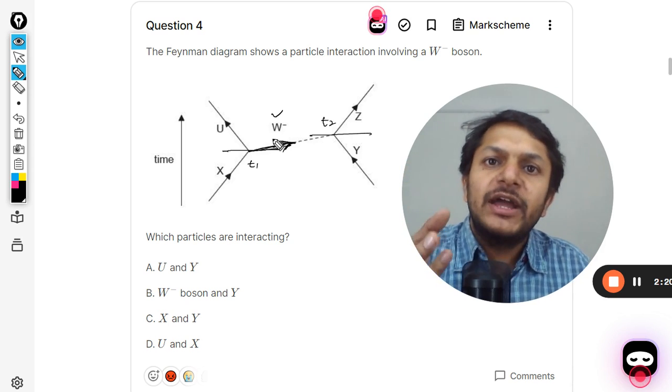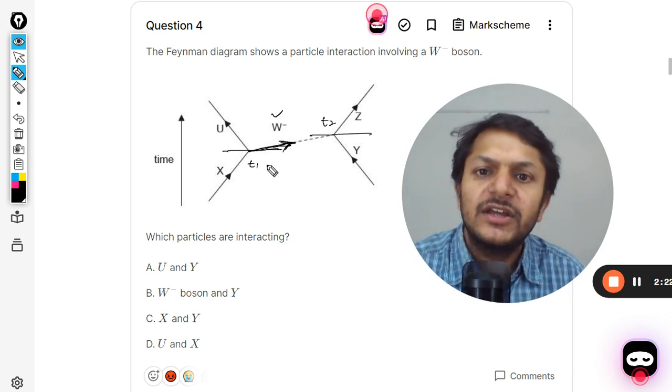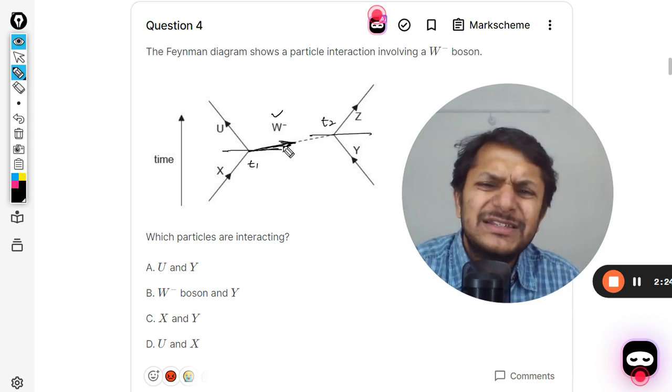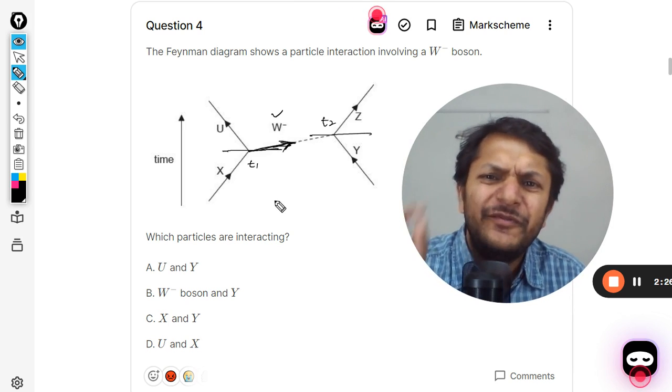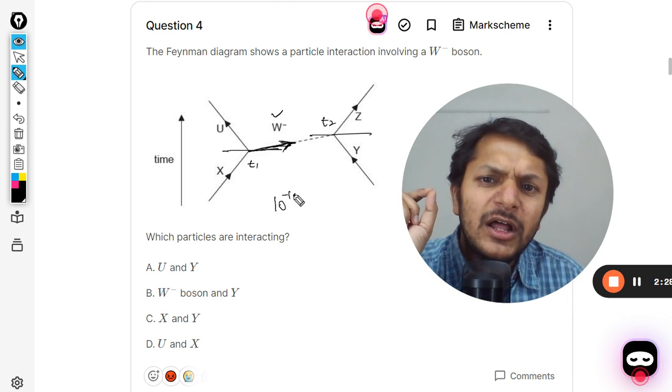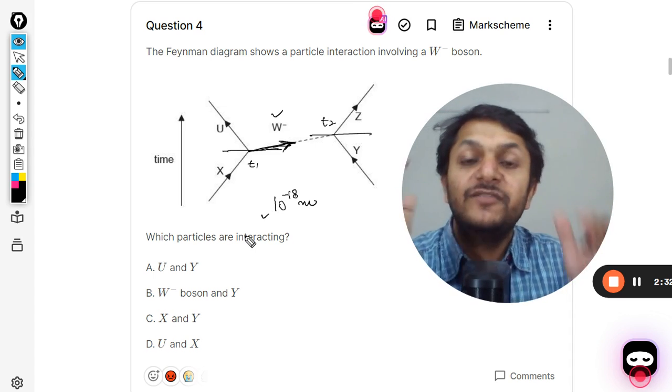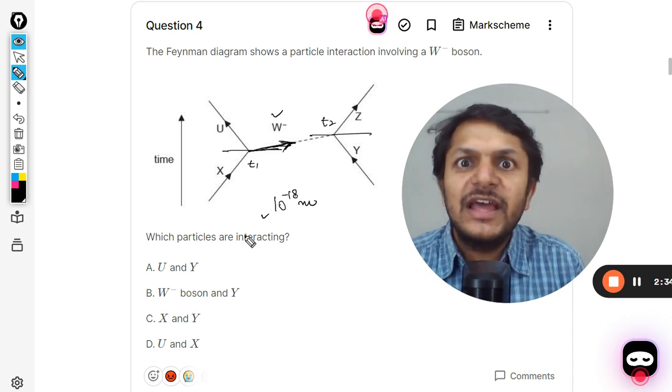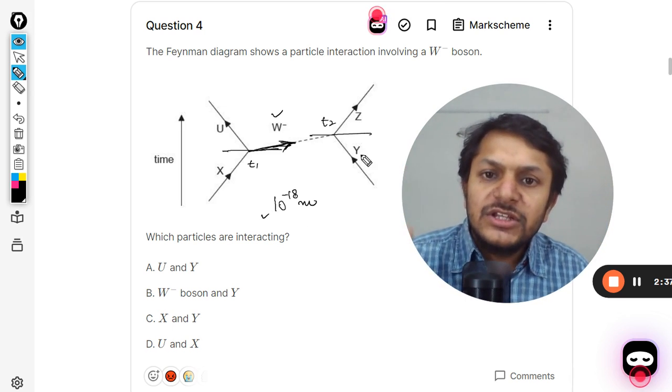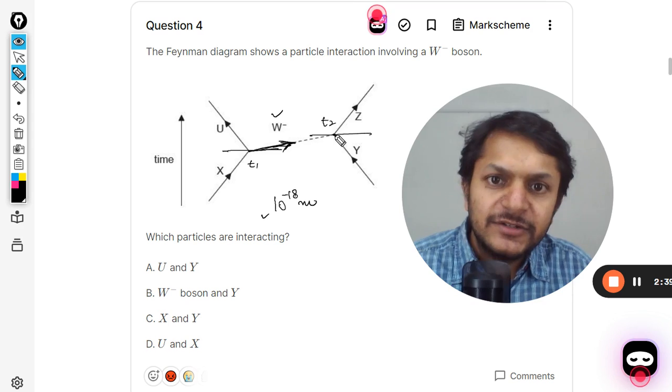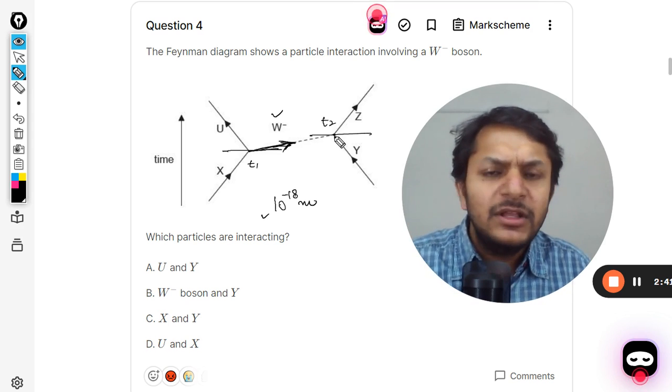W negative boson is that kind of a particle which has a very small life. It just travels a distance of 10 raised to power negative 18 meters and after that it has to die.